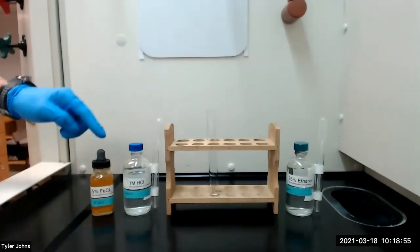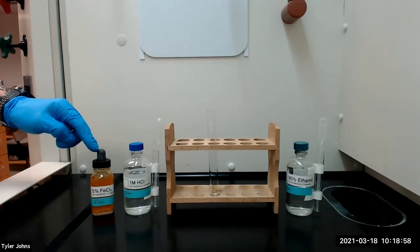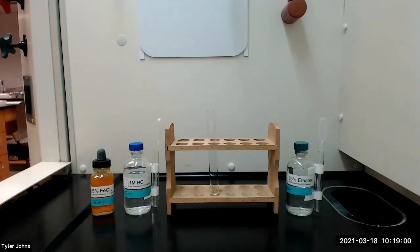We will then add a few drops of 5% ferric chloride solution. A positive test will give a deep burgundy, magenta, or reddish brown color.